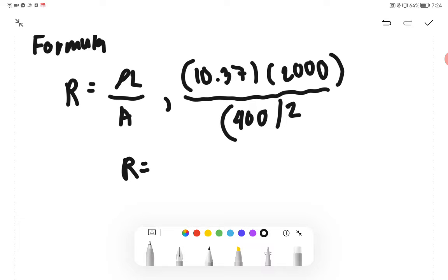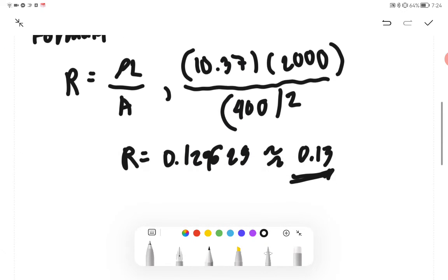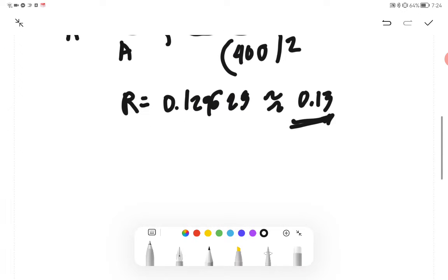We'll obtain the answer of 0.129625 or approximately 0.13 ohms. So what is the formula for the voltage at supply? We have E equals IR plus V.